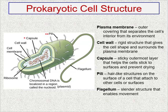On the outside of the cell membrane, a prokaryotic cell may contain a cell wall — a rigid structure that gives the cell shape and surrounds the plasma membrane. On the outside of the cell wall, you may find a capsule, which is a sticky outermost layer that helps it adhere to other cells or surfaces and keeps the cell from drying out. Attached to the surface, you may find hair-like structures called pili, which also help it attach. The prokaryotic cell may also contain a flagellum — a slender structure made of microtubules that enables movement.